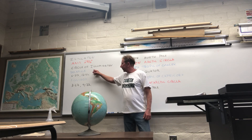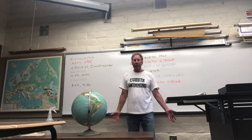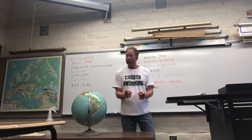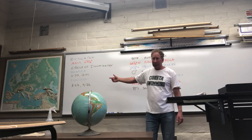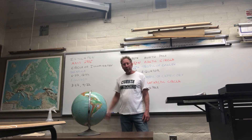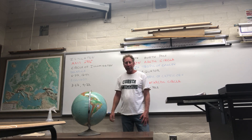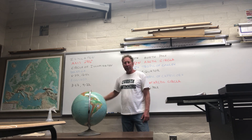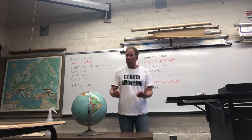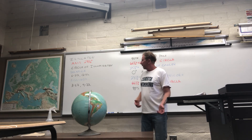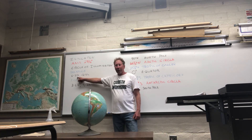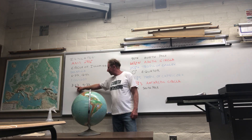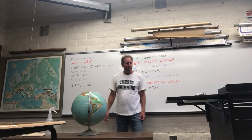There are a couple terms here: solstice and equinox. The two solstices occur June 22nd and December 22nd. The two equinoxes occur in March and September. For us here in San Luis Obispo, June 22nd is the beginning of our summer, December 22nd is winter, March 22nd is springtime, and September 22nd would be the fall.